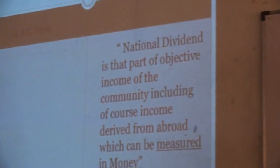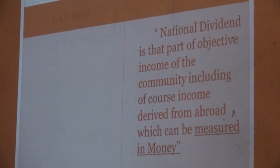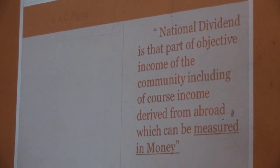The second definition is given by A.C. Pigou. According to him, 'National dividend is that part of objective income of the community, including income derived from abroad, which can be measured in money.' Key points: national income is measured in money; it refers to the income of the community or nation as a whole, not a single person; and it includes income derived from abroad.